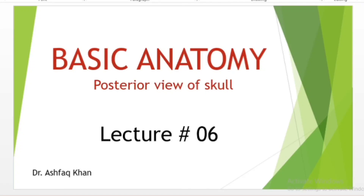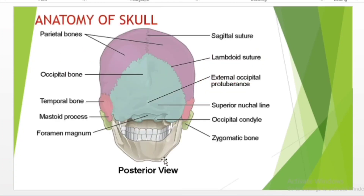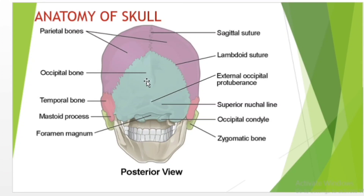Hello everyone, welcome to another anatomy tutorial. This time I'm going to be focusing on the posterior view of your scalp and skull, describing the different structures that can be seen from this view. The posterior view of the skull shows us the important bones that maintain the integrity of the skull. The posterior surface protects the region of the brain that contains the occipital lobe and cerebellum. The occipital bone is the single bone that forms the posterior skull and the posterior base of the cranial cavity.